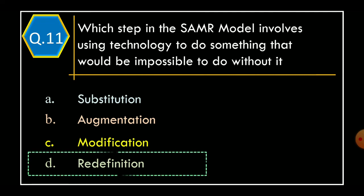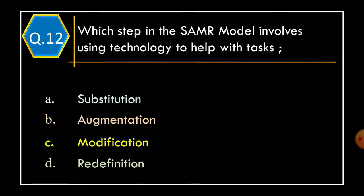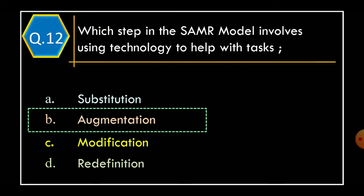Question 12: Which step in the SAMR model involves using technology to help with a task? Option A: Substitution. Option B: Augmentation. Option C: Modification. Option D: Redefinition. And the correct option is Option B: Augmentation.